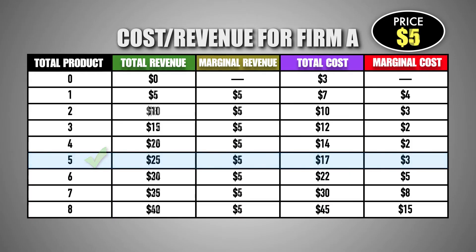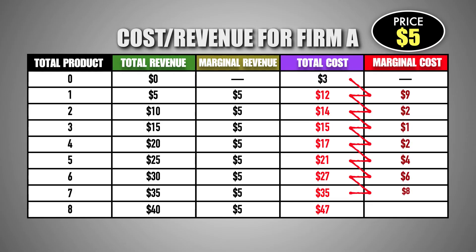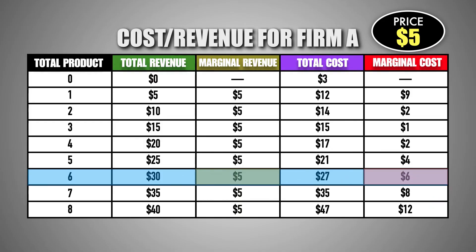Changes in production costs can also alter a firm's profit-maximizing output. Suppose that variable production costs increase, causing total costs to rise for the firm. Because total production costs are now more expensive, the marginal cost paid by the firm to produce each unit of good M has also increased. This means that the firm now has a motive to produce less output. If the firm continued to produce six units, the marginal cost to produce the sixth unit would be $1 more than the marginal revenue it would generate for the firm, thus detracting from profits.